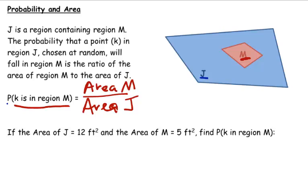So if the area of J is 12 feet squared, we'll say this area is 12 feet squared. And the area of M is 5 feet squared.